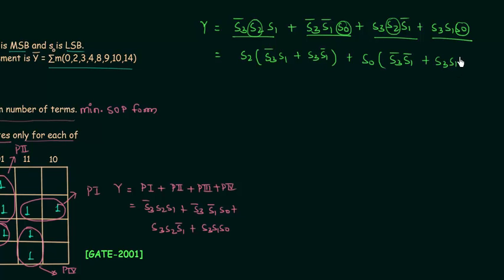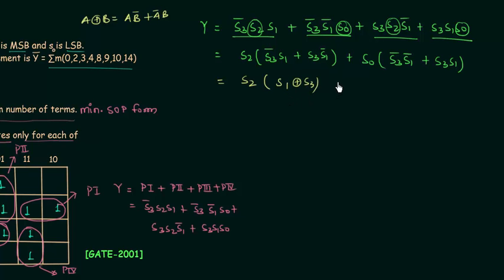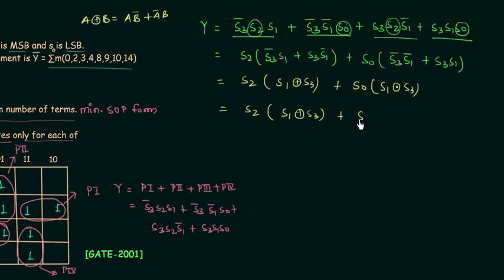Recalling from the logic gates lecture, A XOR B equals A·B-complement + A-complement·B. So S3-complement·S1 + S3·S1-complement is equal to S1 XOR S3. Similarly, S3-complement·S1-complement + S3·S1 is equal to S1 XOR S3 complement, because for two inputs, XNOR is the complement of XOR. So we can write Y = S2·(S1 XOR S3) + S0·(S1 XOR S3)-complement.